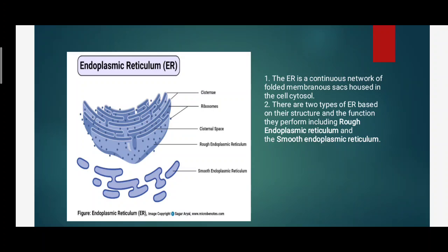The last cell organelle is the endoplasmic reticulum, which is the continuous network of folded membranous sacs housed in the cell cytoplasm. It is mostly present in the cytoplasm and is attached to the nuclear membrane. There are two types: rough endoplasmic reticulum and smooth endoplasmic reticulum. In rough ER, ribosomes are attached, but in smooth ER there is no attachment of ribosomes. We will study the details in next videos.